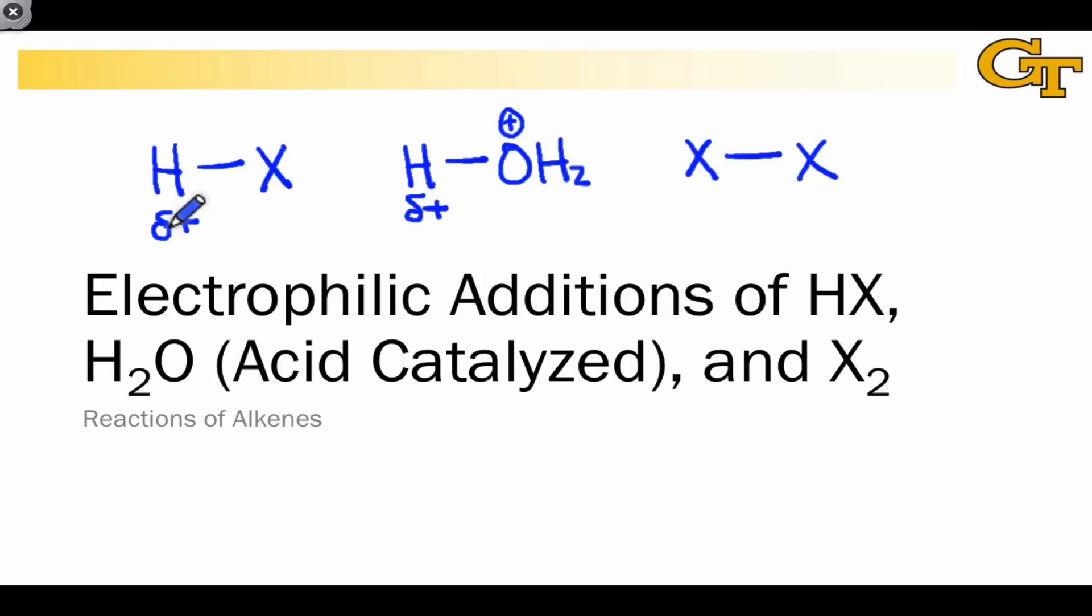In the elemental halogen, we have a symmetric electron distribution. However, we can think of each halogen as connected to a good leaving group. Thus, we can think of each halogen as having a kind of virtual partial positive charge and the potential to act as an electrophile through electron flow like this.